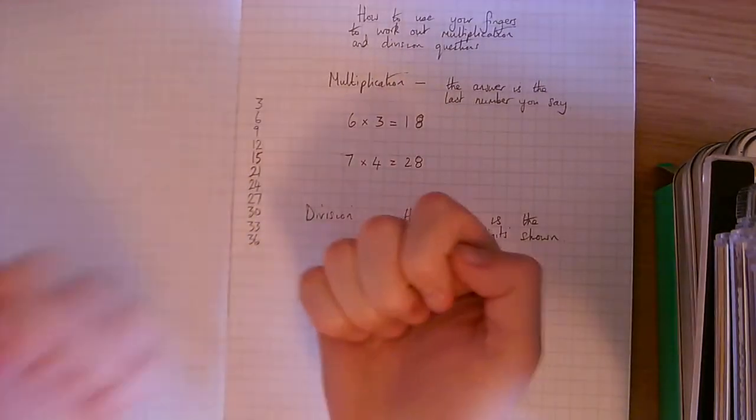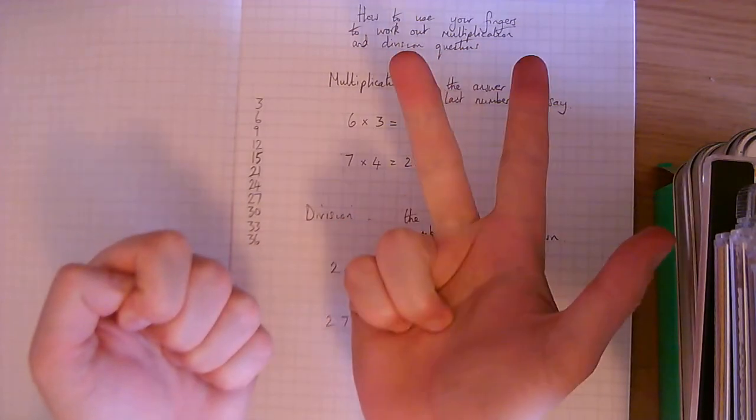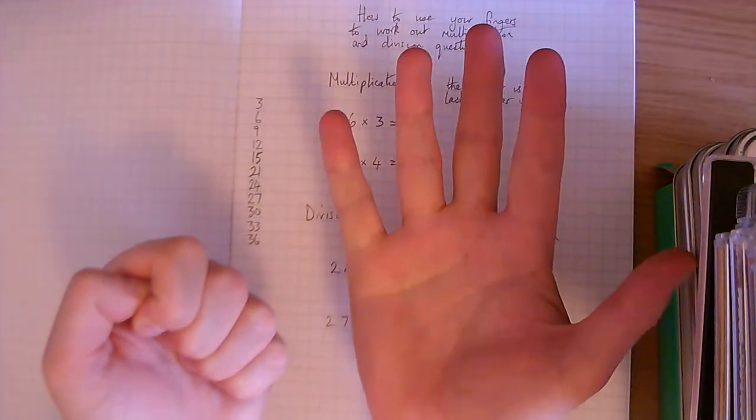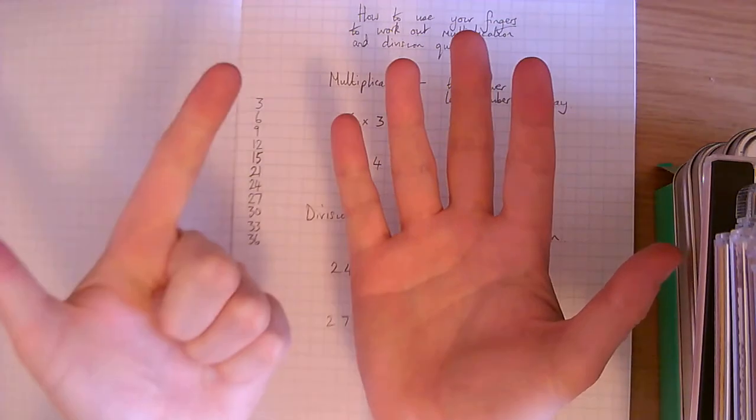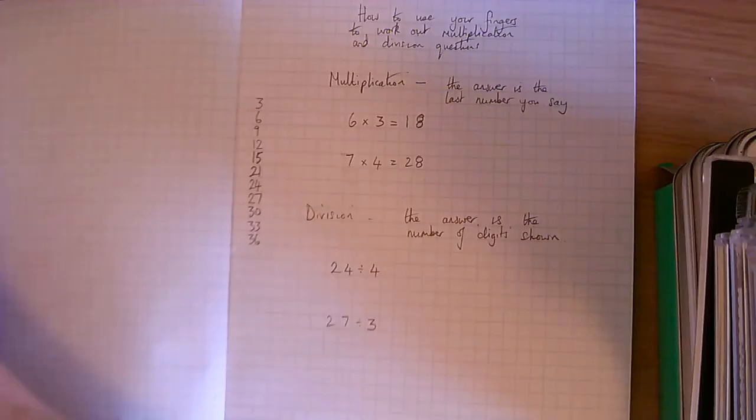Let's check. 4, 8, 12, 16, 20, 24, 28. 7 digits, there they are. 7 times 4, 28. So that's how we do multiplication.